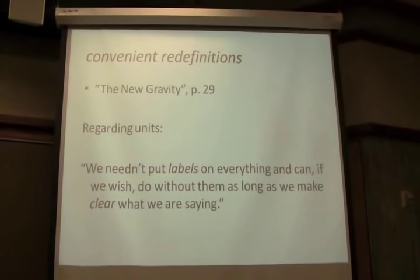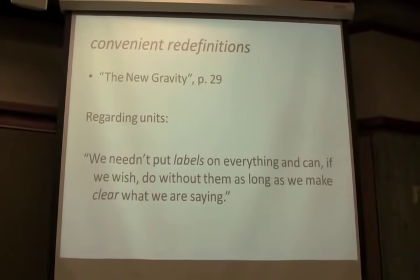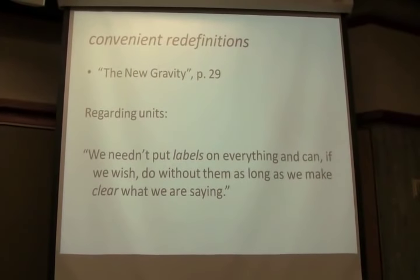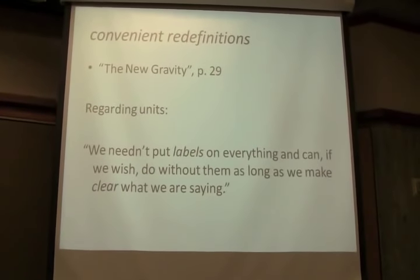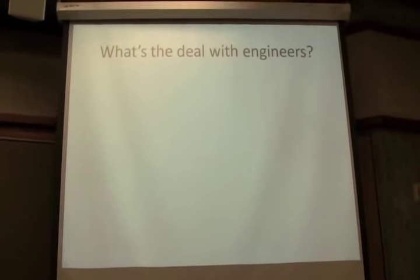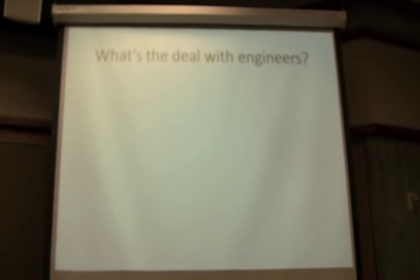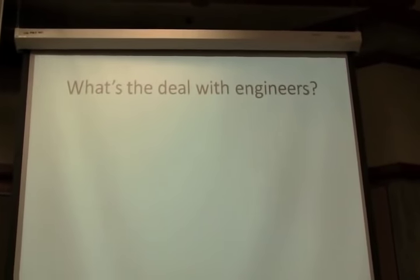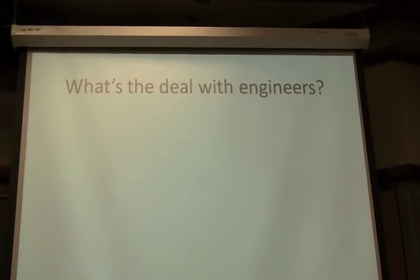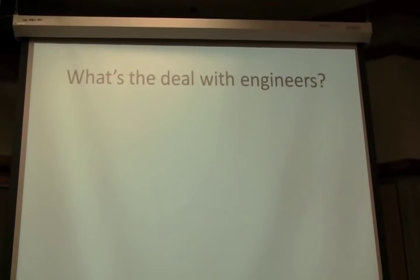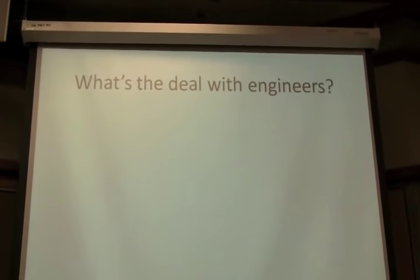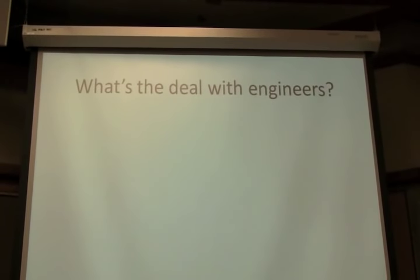The force pulling on each kilogram of mass resting upon the Earth's surface is due to the equivalent outside force constantly pushing the Earth through space at the speed of light. All right. And also in the same book regarding units: that we needn't put labels on everything and can if we wish do without them as long as we make clear what we are saying. Well, it turns out more. Now, a lot of the things that come from the box are from engineers, especially retired engineers. Very few from people in the natural sciences or from mathematics or other technical disciplines. Engineers are disproportionately represented in the box.